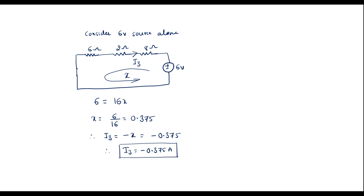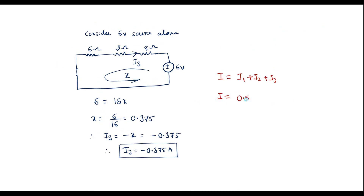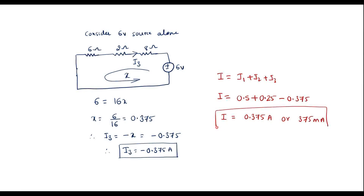Now let me calculate the total current through the 8 ohm resistor: I = I1 + I2 + I3. Therefore I = 0.5 + 0.25 + (−0.375) = 0.375 amps, or equivalently 375 milliamps. This is the total current flowing through the 8 ohm resistor, calculated using superposition theorem.